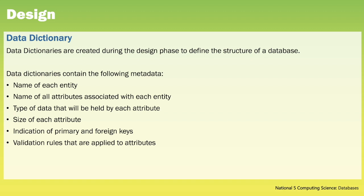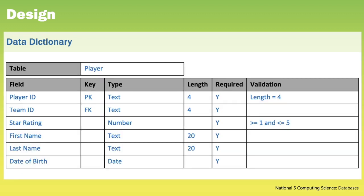Data dictionaries are created during the design phase to define the structure of a database. Data dictionaries contain the following metadata, or data about data: the name of each entity, the name of all attributes associated with each entity, the type of data that will be stored in each attribute, the size of each attribute taking account of the overall file size, an indication of the primary and foreign keys, and any validation rules that are applied to the attributes. Let's have a quick look at a data dictionary — you can see that this data dictionary contains all the information described.